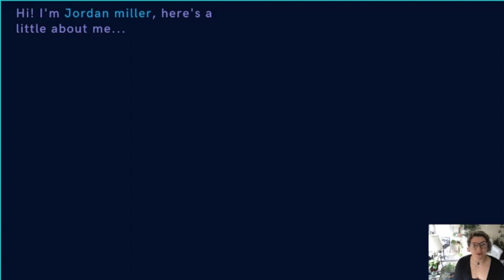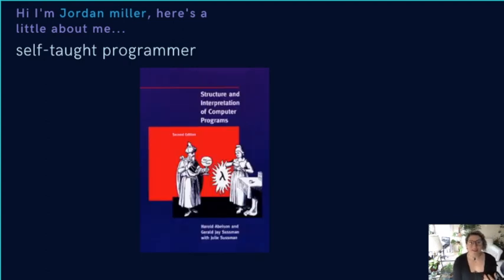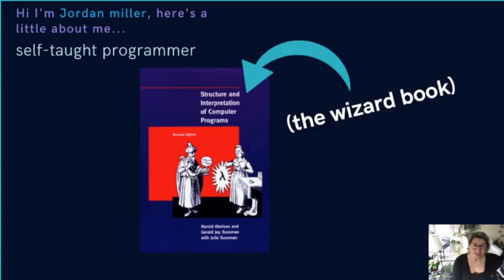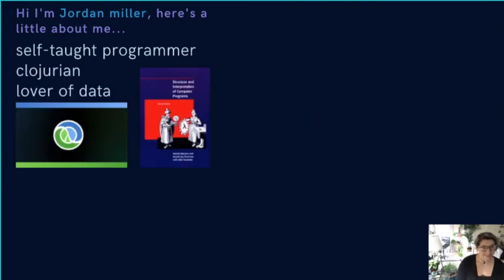My name is Jordan Miller. I am a self-taught programmer, and I'll begin this talk the same way my programming journey first began — with the sacred textbook of functional programming, Structure and Interpretation of Computer Programs. SICP, or simply the wizard book. Professionally, I do ClojureScript and Clojure, which are higher-level dynamically typed Lisp languages that compile to JavaScript and Java.